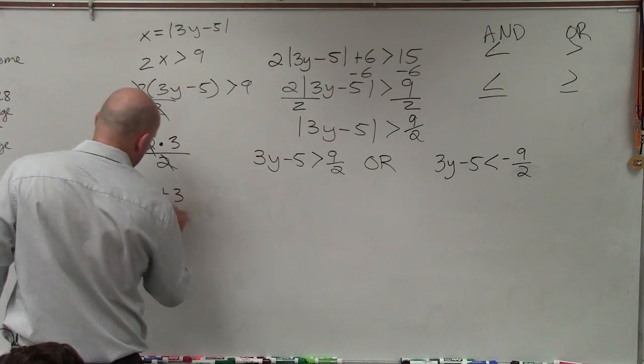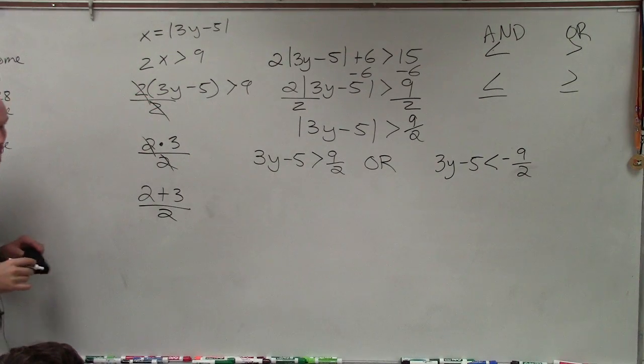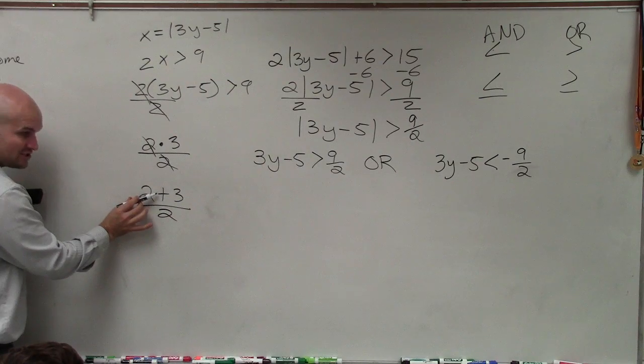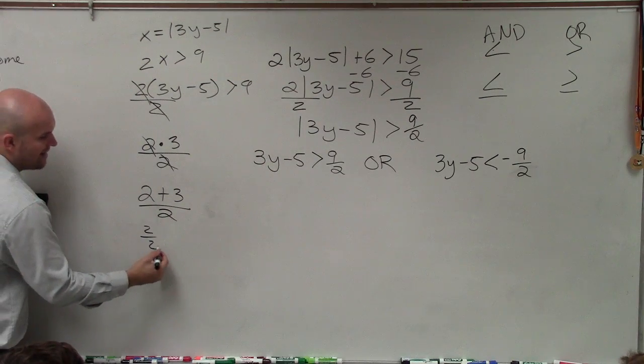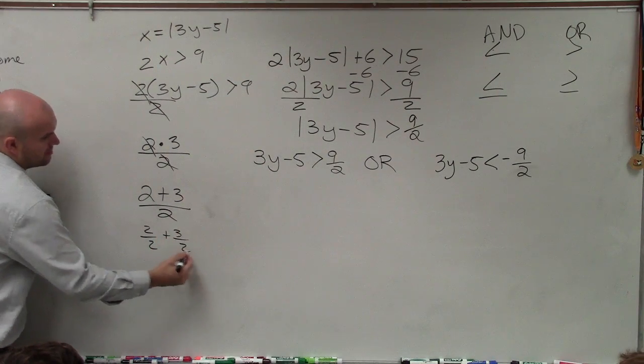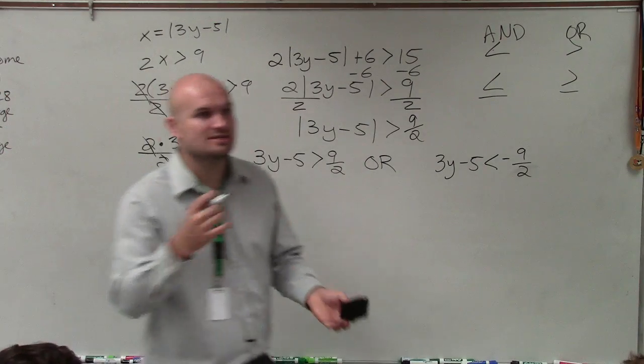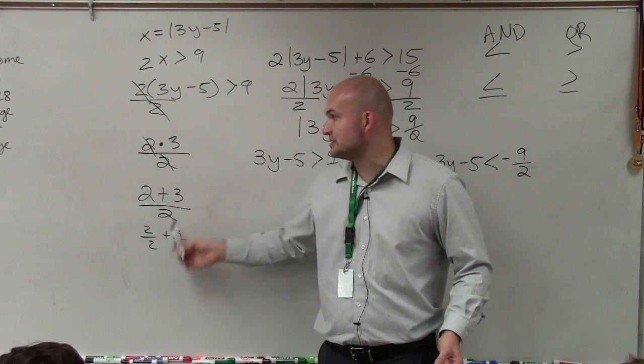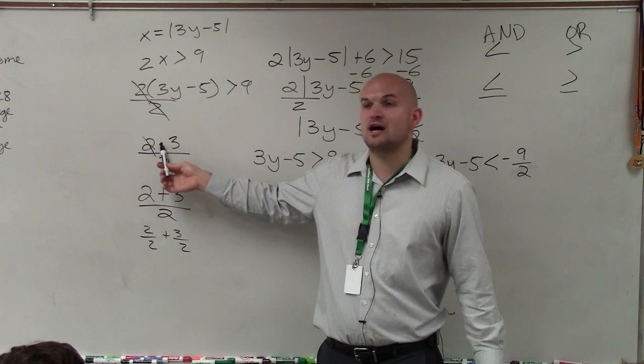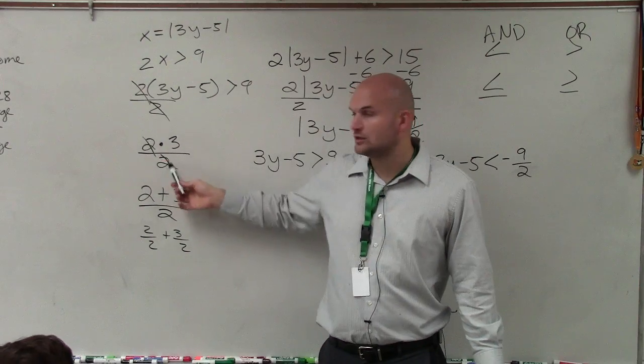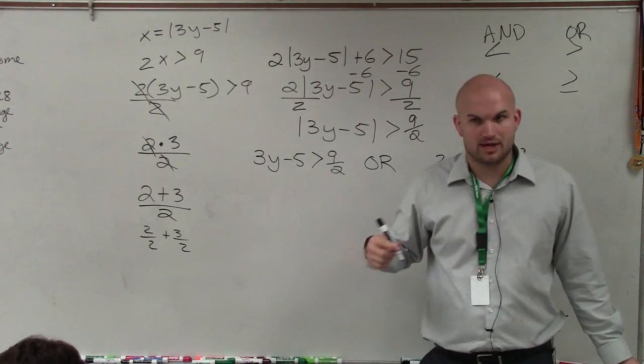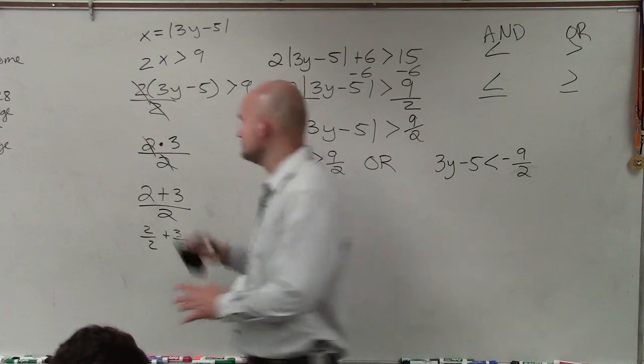However, this is where it can get confusing. When you're dividing across addition or subtraction, then you have to break it up. So when you're dividing across addition or subtraction, you have to divide the two into both of them. However, when it's across multiplication, you can just divide those two out. Does that make a little sense?